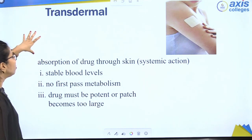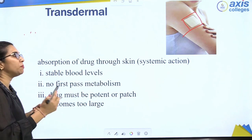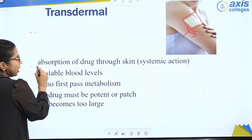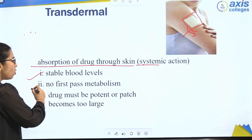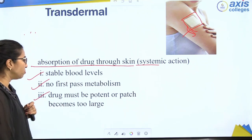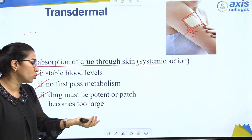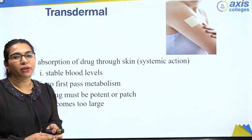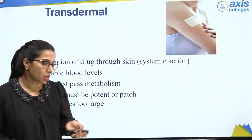The transdermal patch is placed on the upper surface of the skin. The drug is absorbed through the skin, producing systemic action. It maintains a stable blood drug level since the drug releases slowly, and there is no first-pass metabolism. However, the drug used must be potent enough to produce the required action — otherwise the patch may become too large. This concludes the topic of routes of drug administration, covering parenteral, oral, topical, and all related routes.